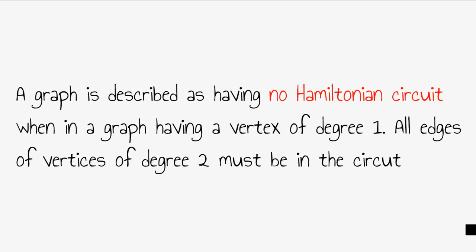A graph is described as having no Hamiltonian circuit when, in a graph having a vertex of degree 1, all of the edges of vertices of degree 2 must be in the circuit. Here's an example to illustrate that.